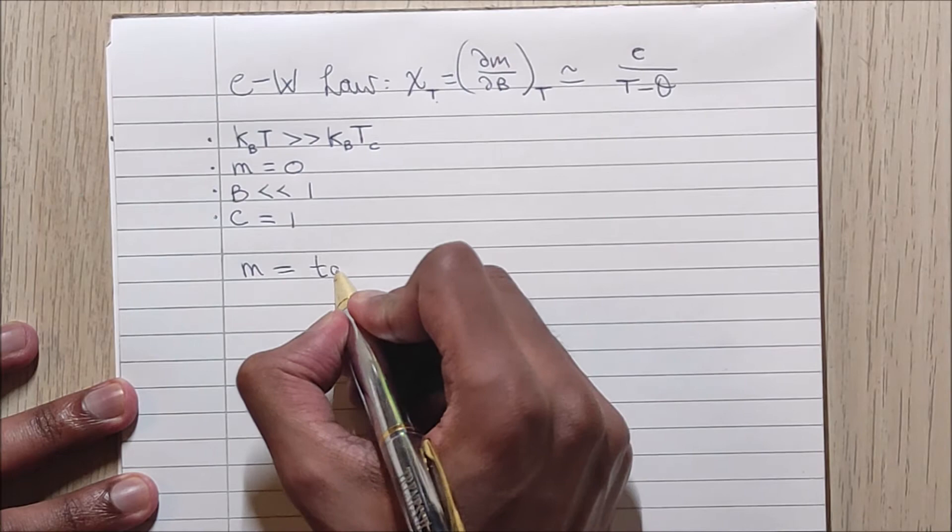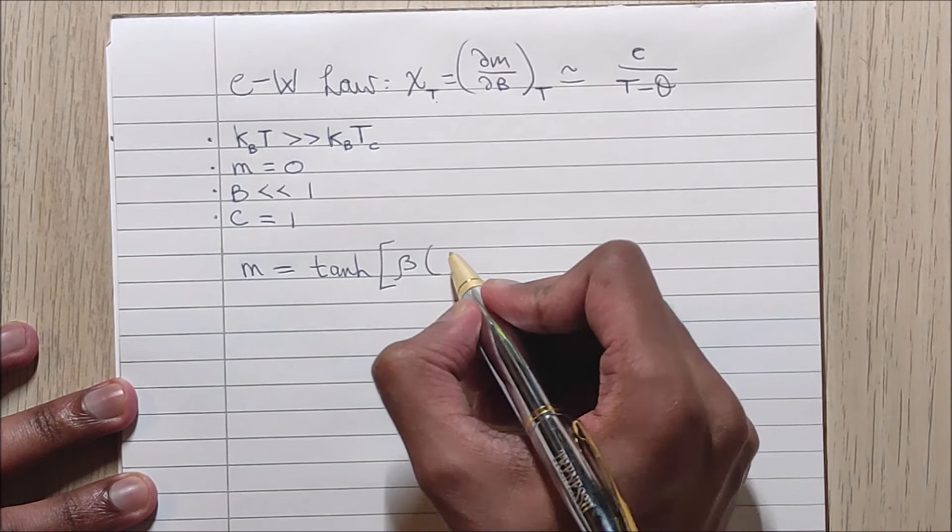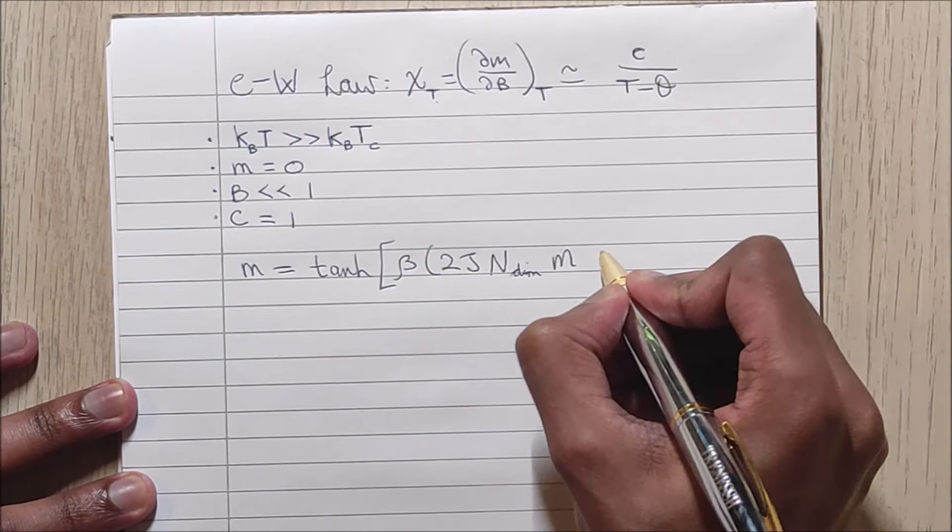So we have M is equal to hyperbolic tan of beta times 2JN_dim M plus B.